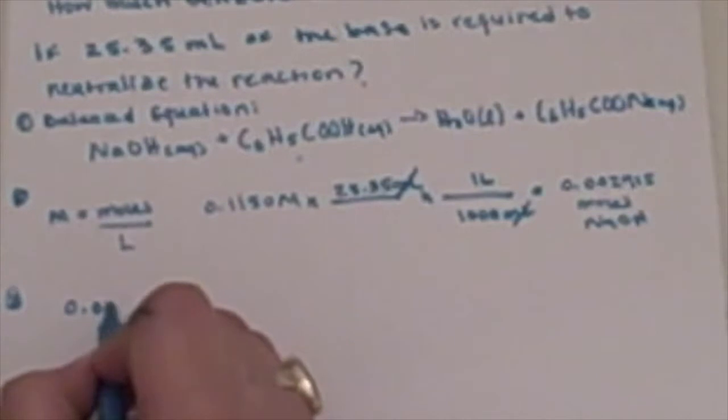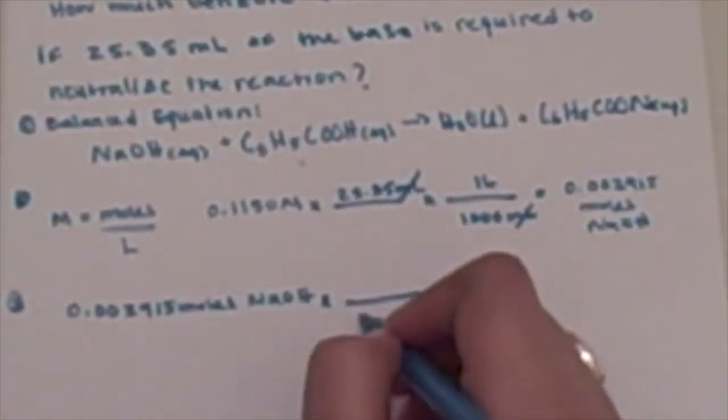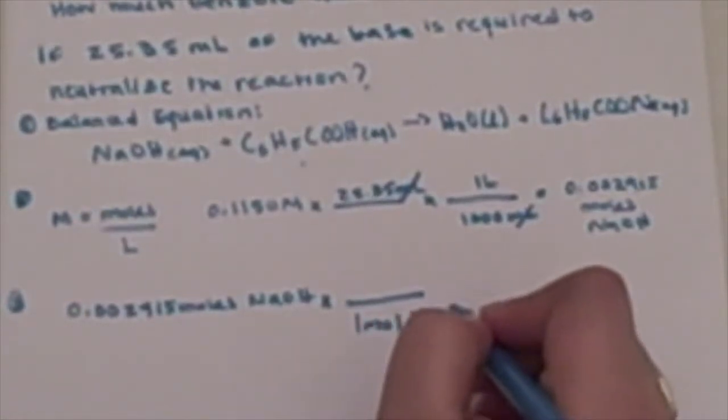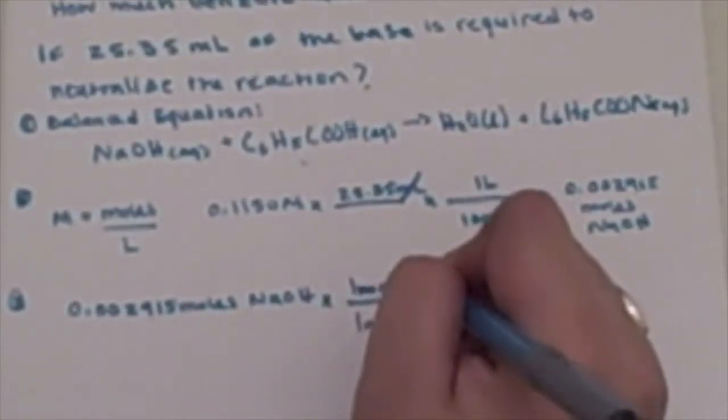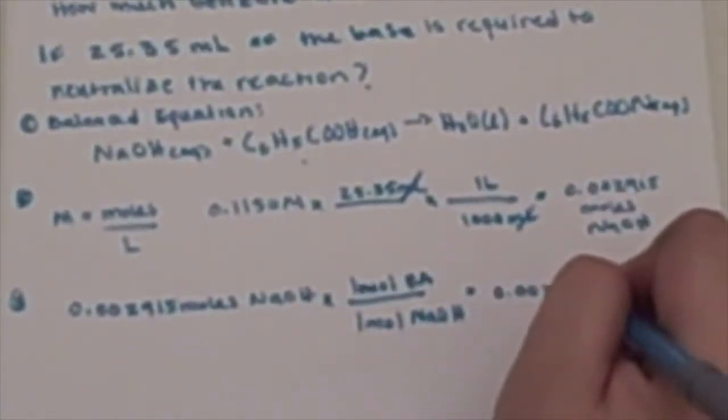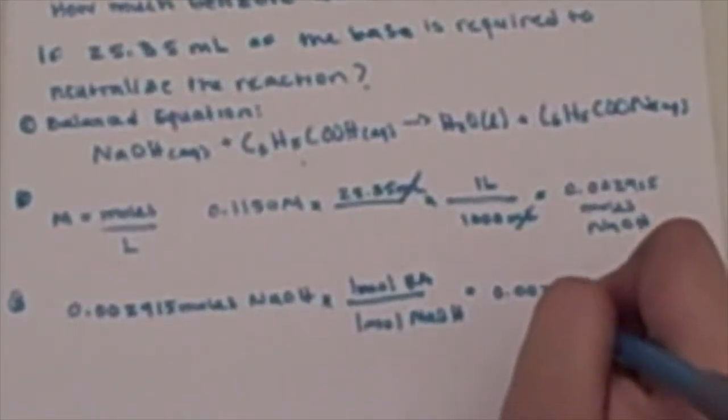Here we can take the moles of NaOH that we just found, and then we're going to multiply it by the stoichiometric value of benzoic acid. We know that for every one mole of NaOH, we get one mole of benzoic acid. That means we should get the same amount of moles for our benzoic acid.